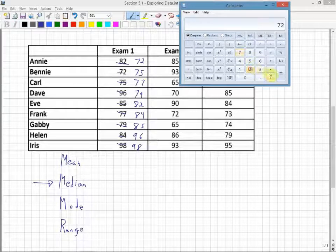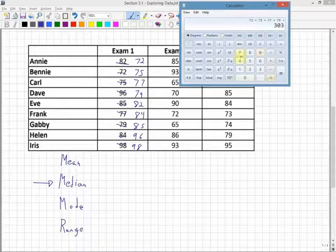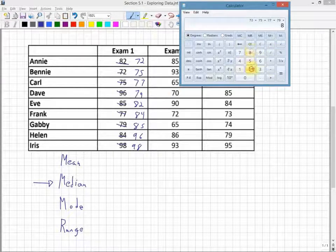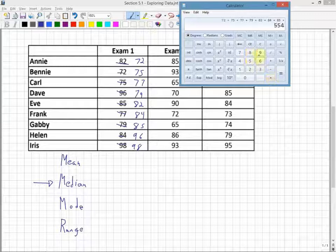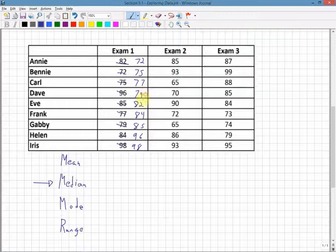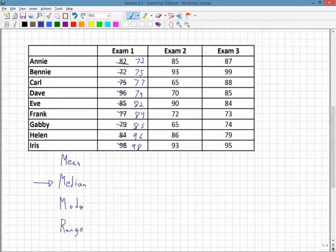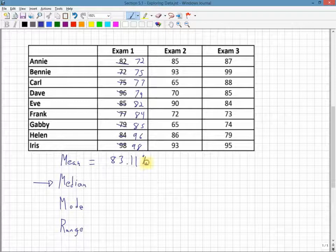The mean is just the average, so we add them all up. These would be marks in a class, right? So I add them all up, divide by how many there are: 1, 2, 3, 4, 5, 6, 7, 8, 9. Divide by 9 and get 83.11 as the average, the class average.